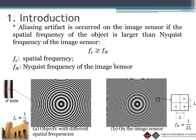We also have an image sensor that has many pixels. The pixel pitch distance is denoted by L. The Nyquist frequency is defined by the inverse value of two times the pixel pitch. Aliasing artifact will occur when the spatial frequency is larger than the Nyquist frequency.